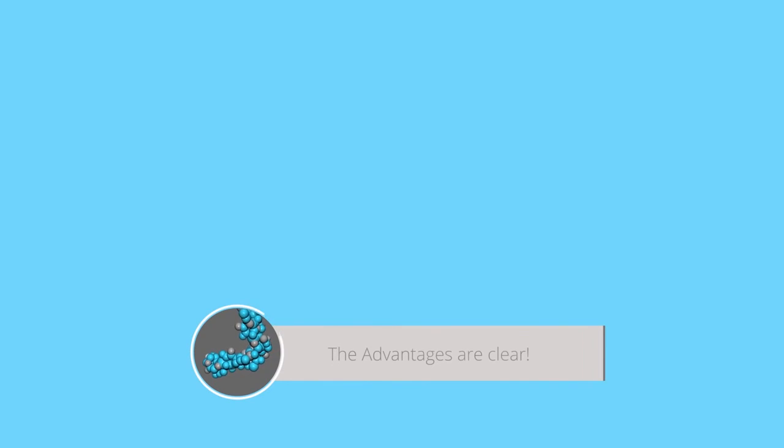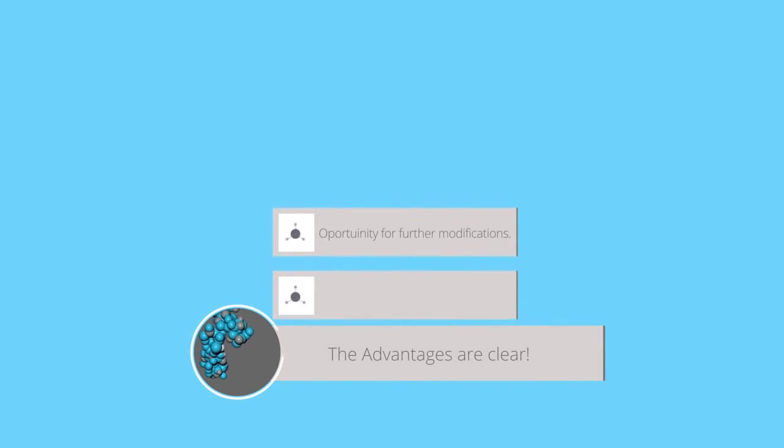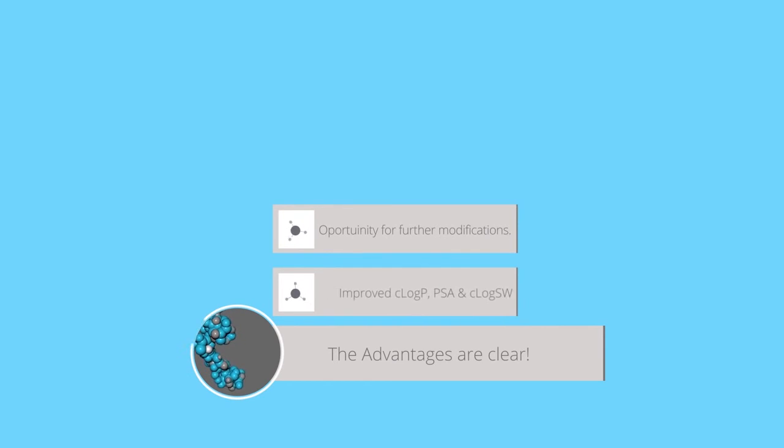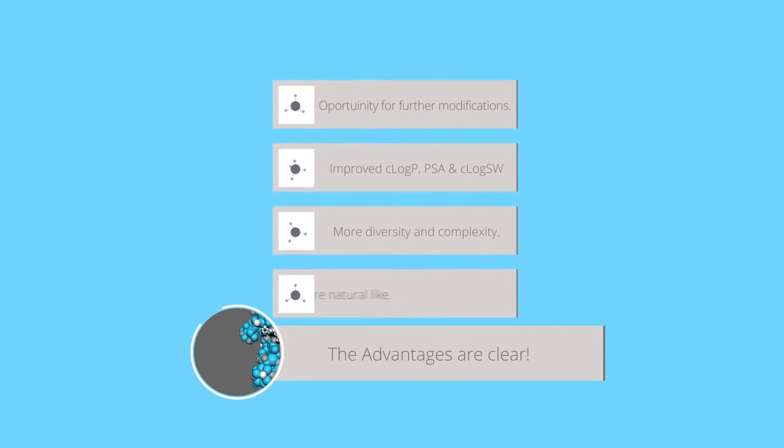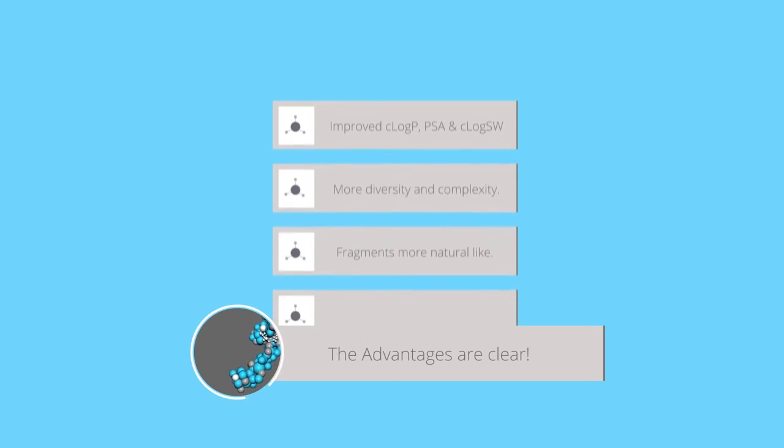The benefits of the new 3D fragment library are clear. More opportunity for further fragment modification. The log p, PSA, and water solubility parameters are all improved. There is more diversity and complexity. The fragments are more natural-like. The fragments are more likely to have a better affinity and selectivity for target proteins.